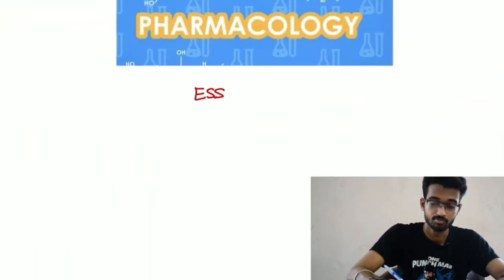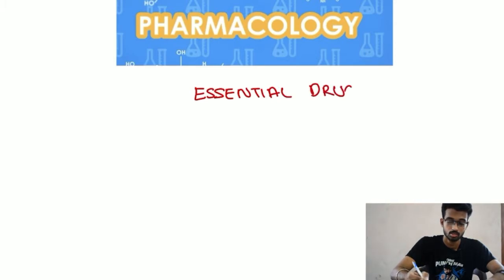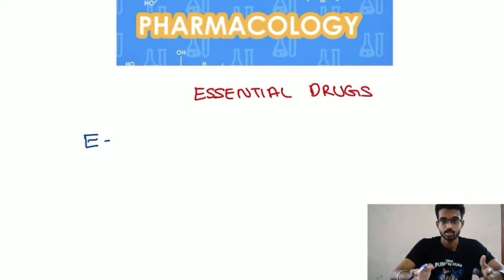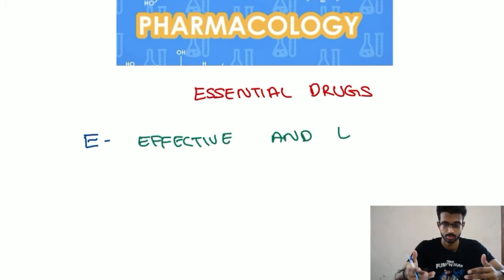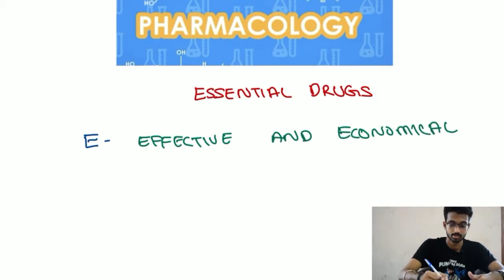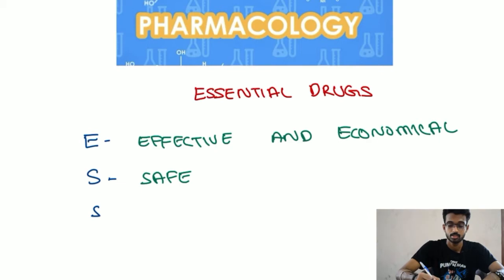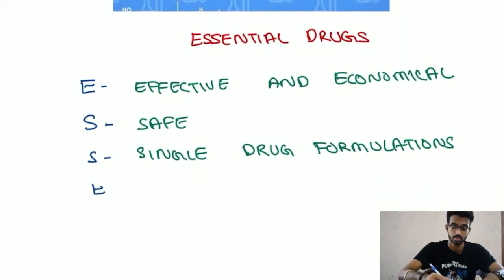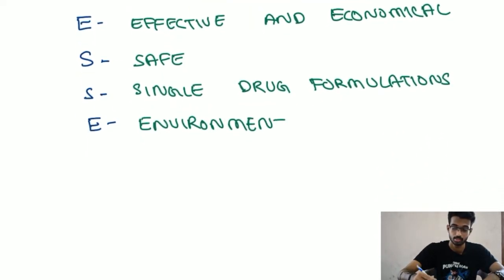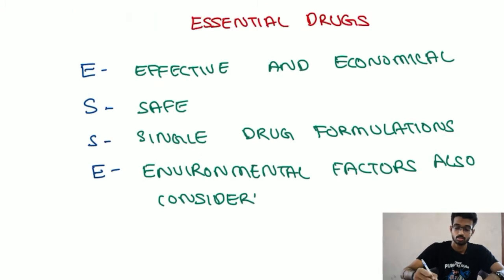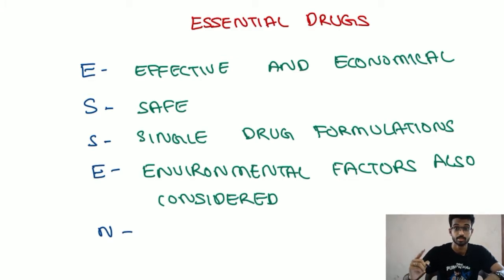E is effective and economical. So if we are going to talk about a drug, it is effective and economical. S is safe — if we are able to use it as well. Next, single drug formulations. E is called as environmental factors.